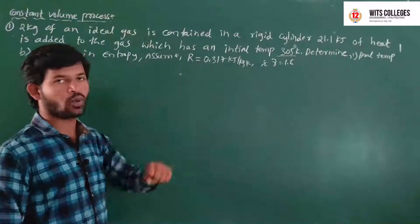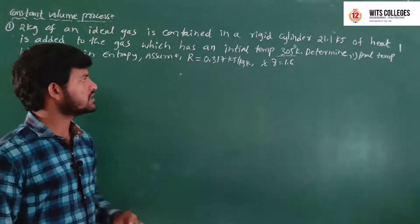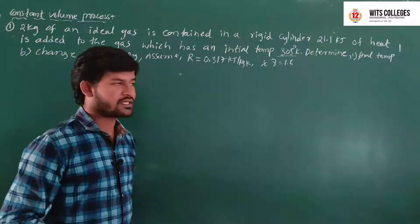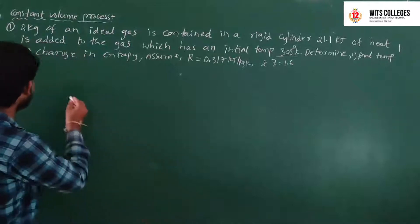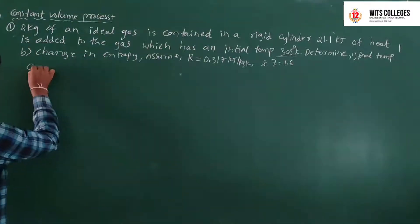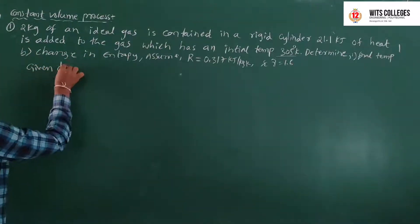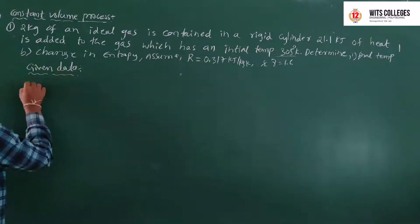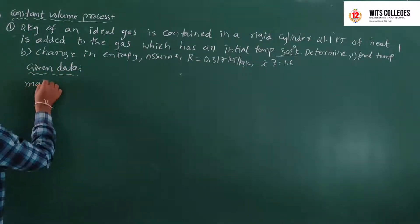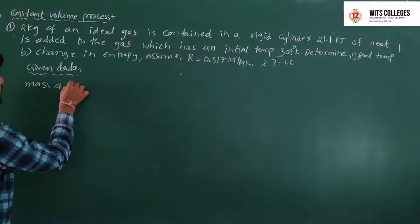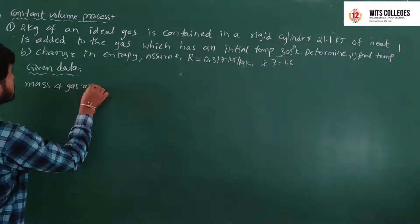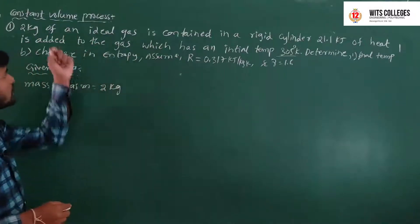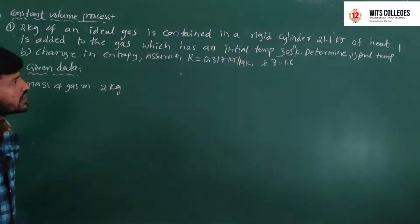Assume R equals 0.317 kJ per kg·Kelvin, and gamma equals 1.6. Given data: mass of gas M equals 2 kg.